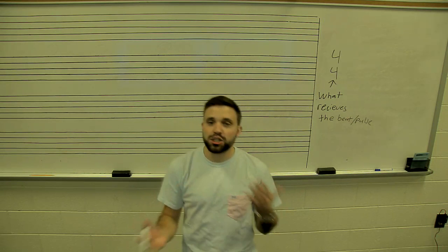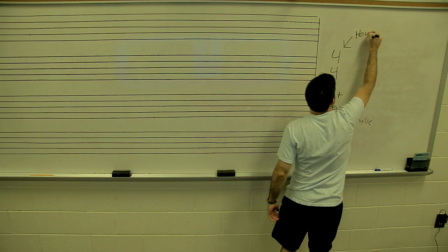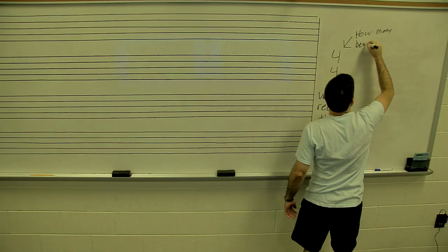Beat and pulse are interchangeable terms. So the bottom number tells us what receives the beat, and the top number tells us how many beats per measure.